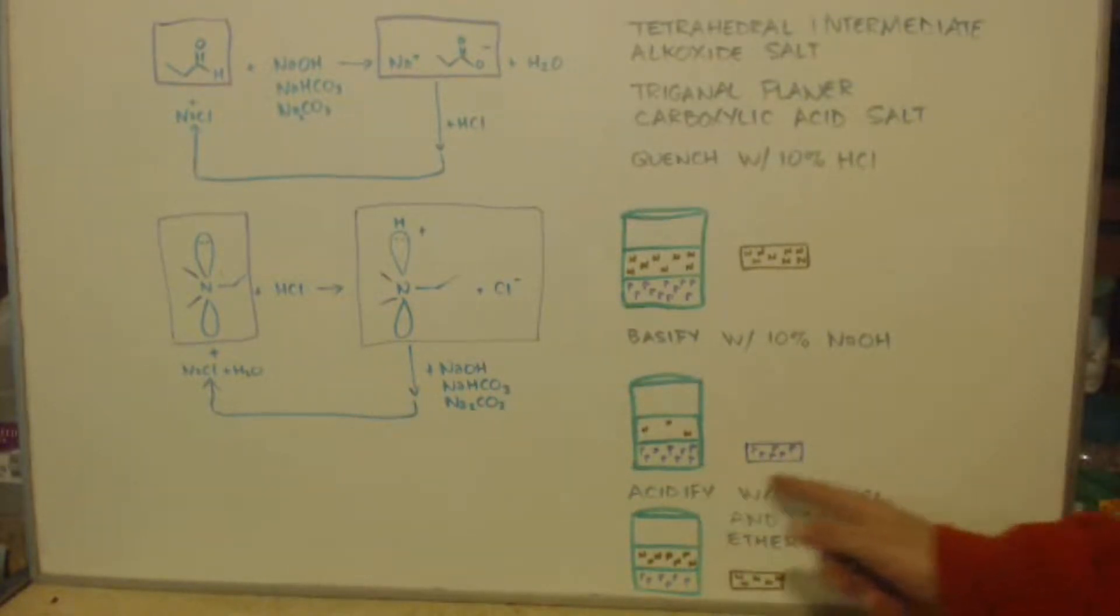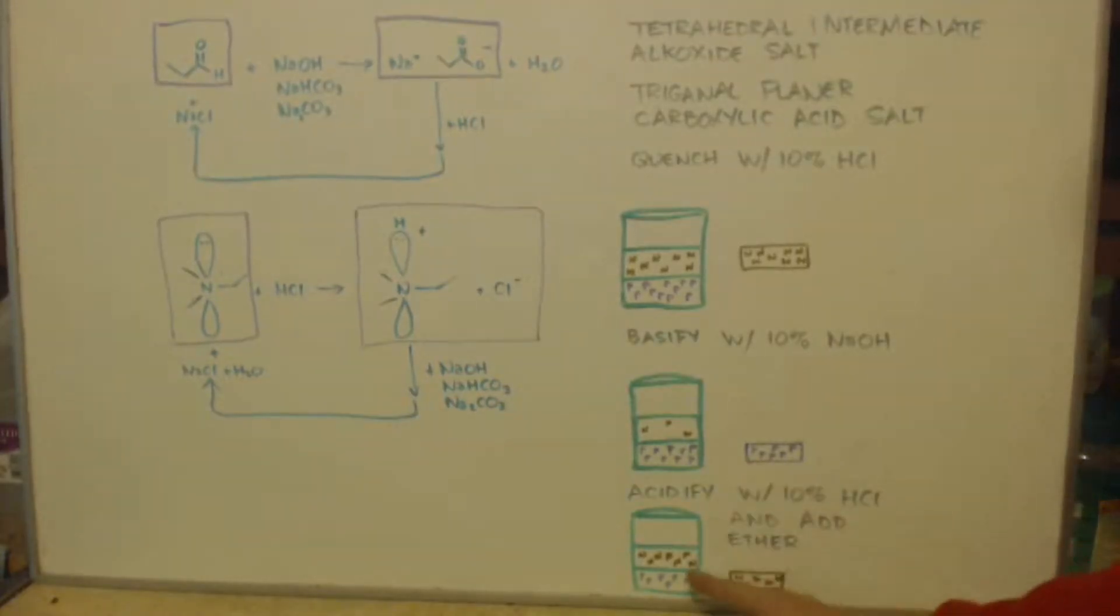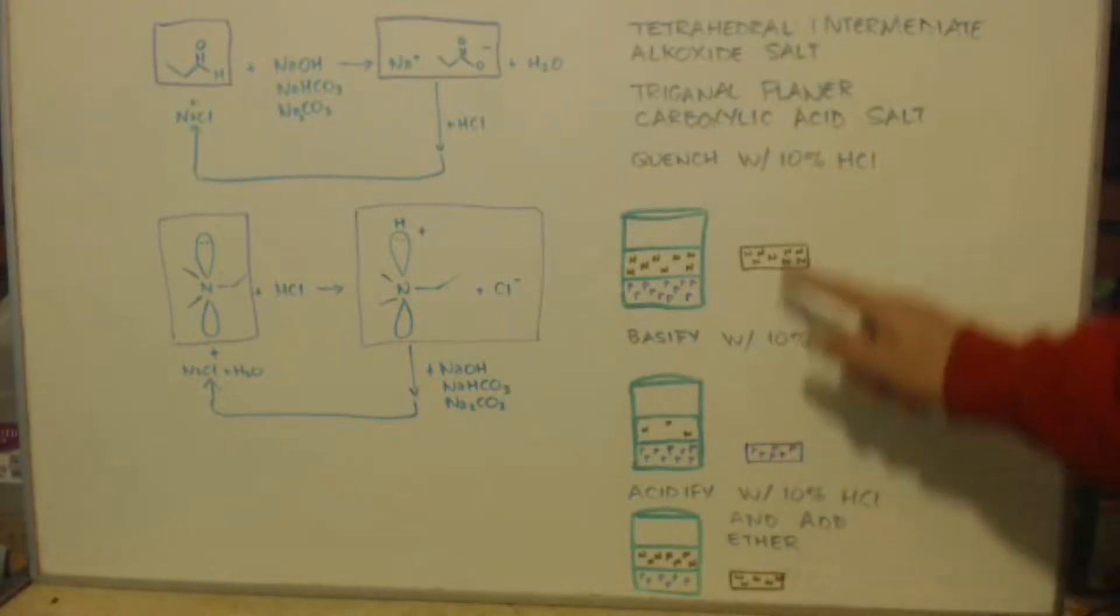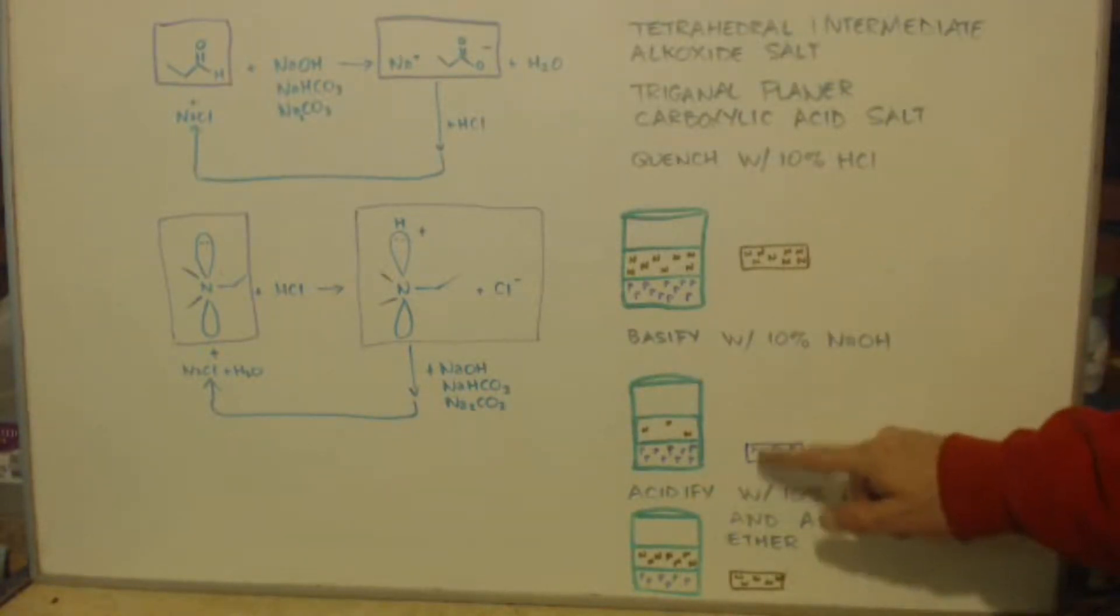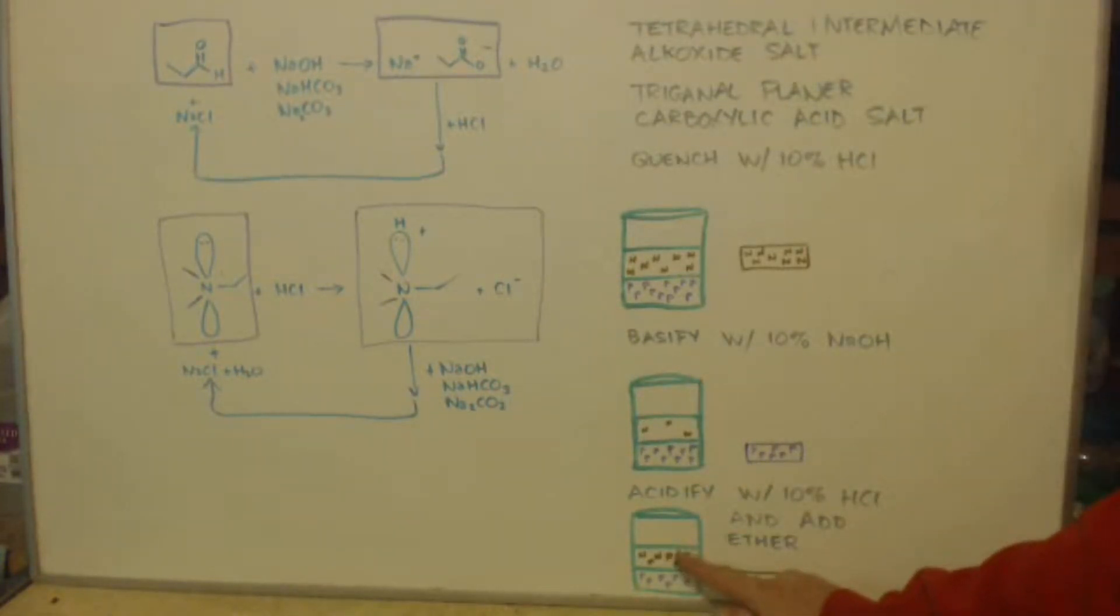Now you acidify it again with HCl, and you go back to the acid, right? And it would become non-polar. Throw some salt in there to salt it out even more. And now, since you got rid of all your non-polar stuff up here, you have no non-polar impurities. They're all stuck right here. You have none. So the only thing that can be sucked out with the ether is your product, which is the propanoic acid.